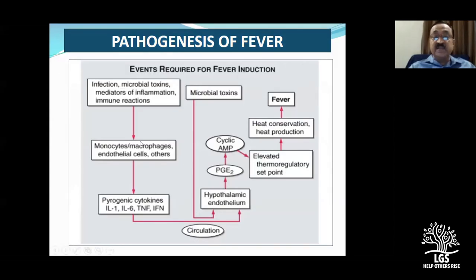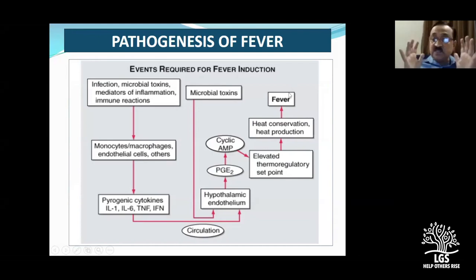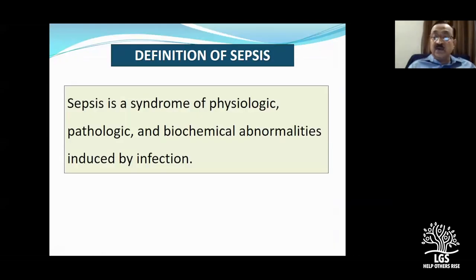In simple language: toxins activate macrophages and endothelial cells, cytokines are released, they attack the hypothalamus, prostaglandins are released, the thermoregulatory set point is raised, the body conserves heat and increases heat production — the net result is development of fever. This is the basic pathogenesis of fever.